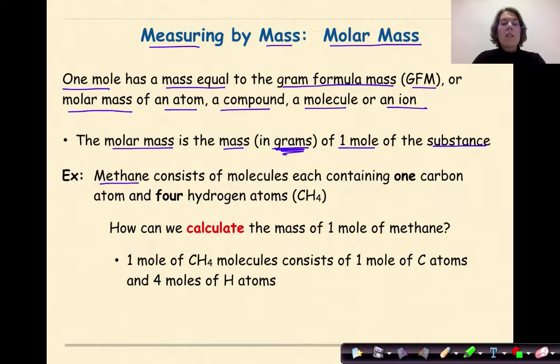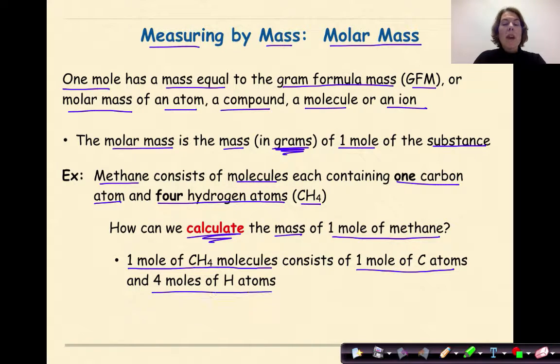Methane consists of molecules, each containing one carbon atom and four hydrogen atoms. And the chemical formula for methane is CH4. How can we calculate the mass of one mole of methane? Well, one mole of CH4 molecules consists of one mole of carbon atoms and four moles of hydrogen atoms. And you might say, how do you know that?